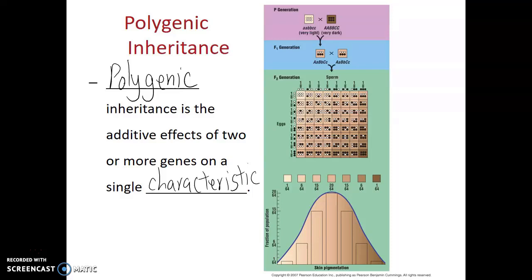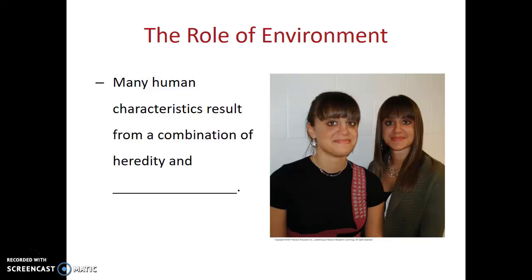Another trait that shows polygenic inheritance in humans is height — the height that an individual is genetically predisposed to is controlled by multiple separate genes. Another aspect Gregor Mendel did not consider is the role that environment plays in determining an organism's phenotype. Many human characteristics come from a combination of heredity and environment. For example, two identical twin girls have the exact same genetic sequence, but they have slightly different phenotypes — one possibly spends more time in the sun and so has slightly darker skin and lighter hair. Taken to an extreme, if one of those girls bleached her hair and dyed it blue, her blue hair would be a very different phenotype from her sister, yet that wouldn't be caused by genetics — it would be entirely dependent on the environment.